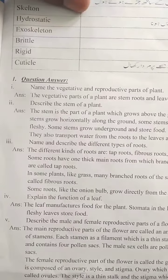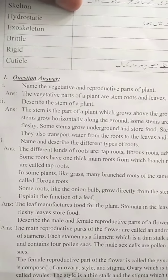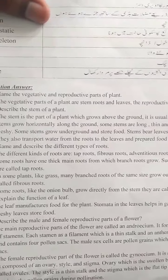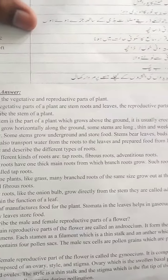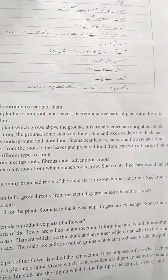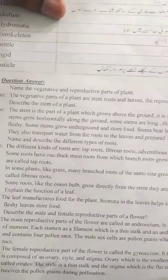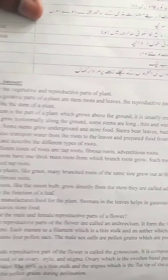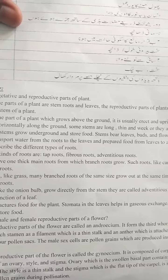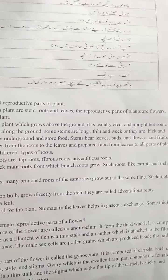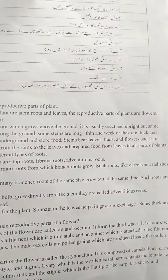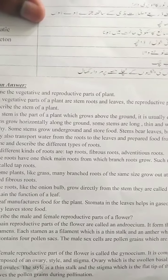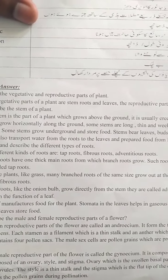The stem is the part of a plant which grows above the ground. It is usually erect and upright, but some stems grow horizontally along the ground. Some stems are long, thin, and weak, or they are thick and fleshy. Some stems grow underground and store food.